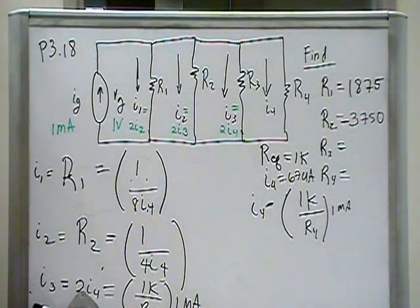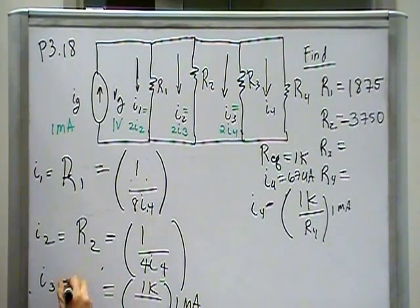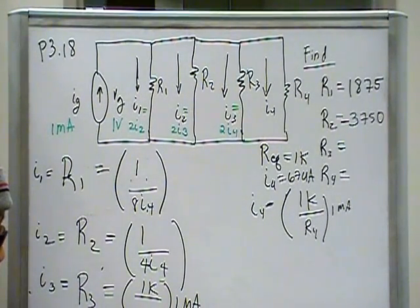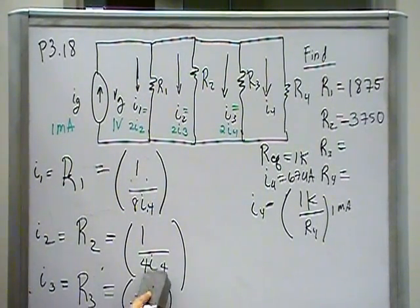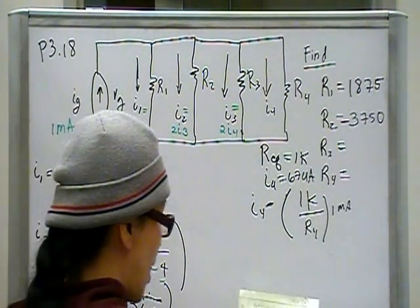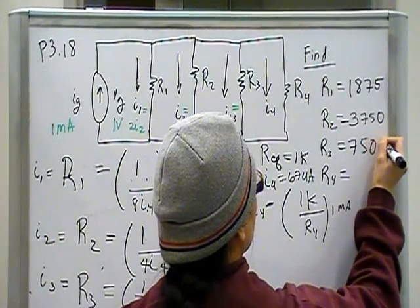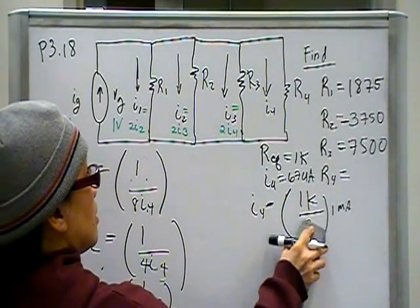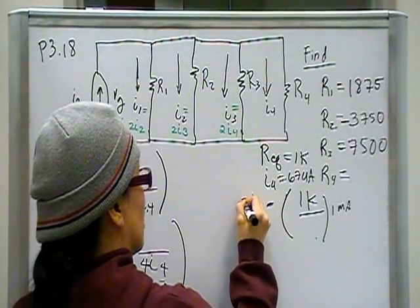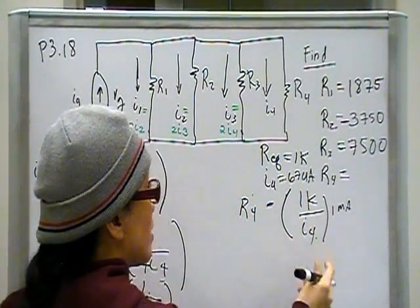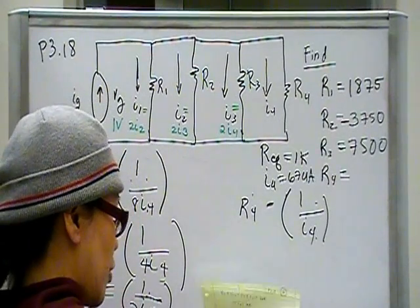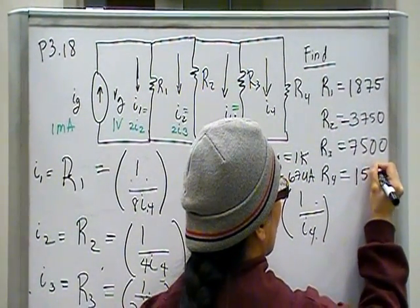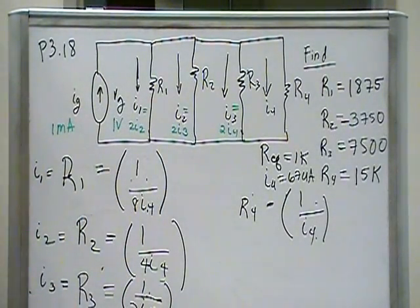R3. So you have 2I4 here. I'm going to swap places for these two. R3, and that's going to be 2I4. Millis cancel with kilos, so put 1 over 2 times 67 microamps and you should end up with 7500 for R3. And last but not least, R4 is 1 over I4. And when you do 1 divided by 67 microamps, you should end up with 15k. And those are the resistor values that will satisfy our design requirements.